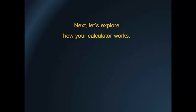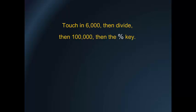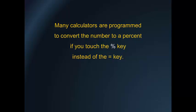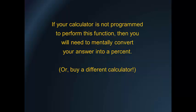Next, let's explore how your calculator works. Touch in 6,000, then divide, then 100,000, then the percent key. Many calculators are programmed to convert the number to a percent if you touch the percent key instead of the equal key. If your calculator is not programmed to perform this function, then you will need to mentally convert your answer into a percent.